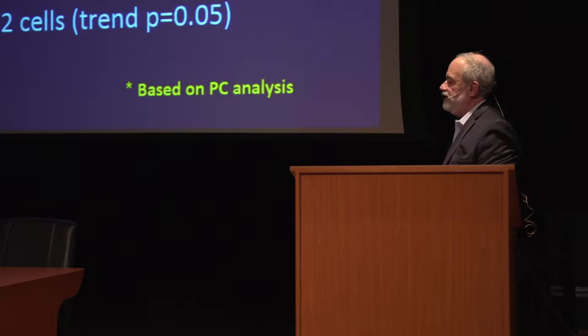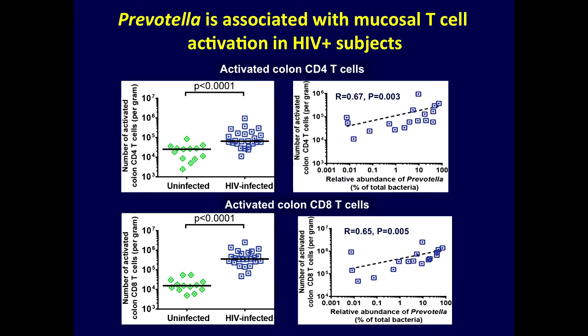Looking at the relative abundance of Prevotella as a percent of total bacteria, we correlate it with numbers of activated CD4 and CD8 cells in uninfected and infected subjects. There's a fairly high degree of significance — a positive correlation with increasing activation among both CD4 and CD8 cells and the presence of Prevotella. We've dug down more into the genus and species of Prevotella that are present in these patients that may be linked to this.